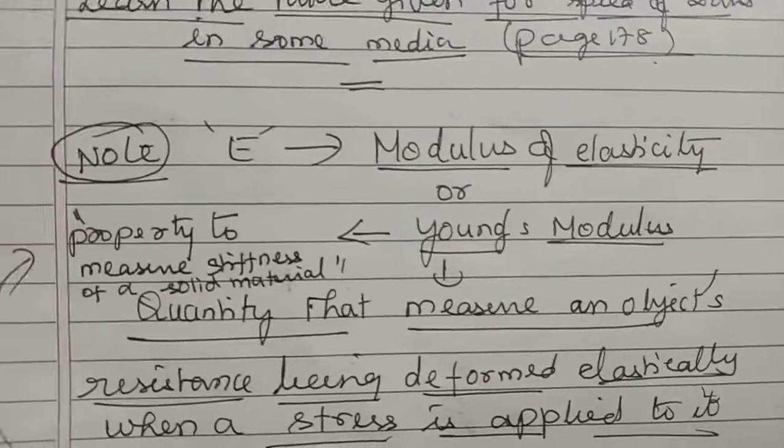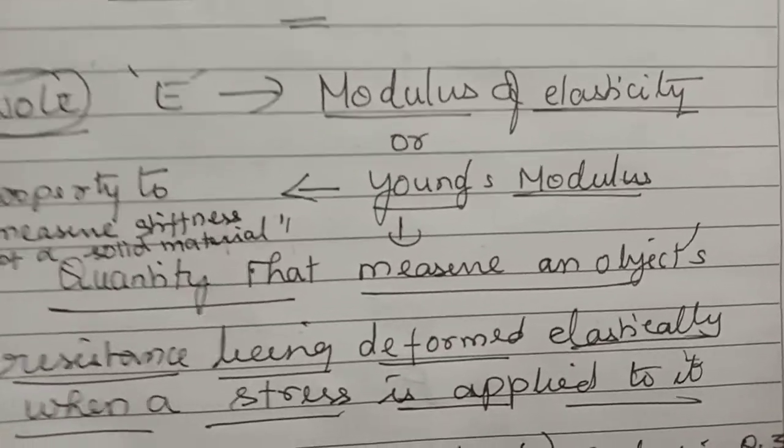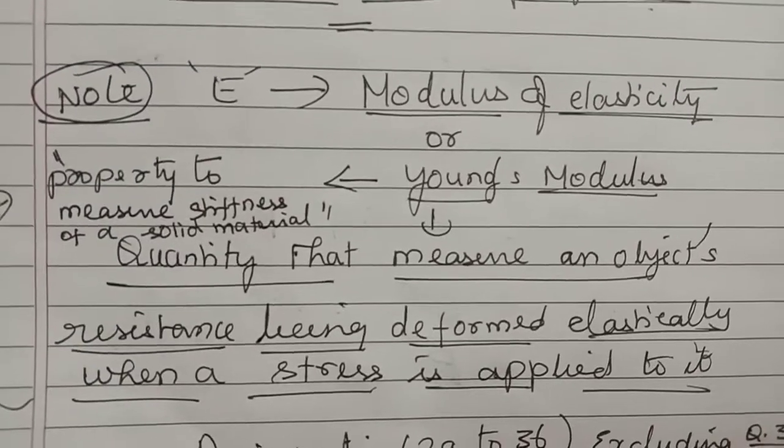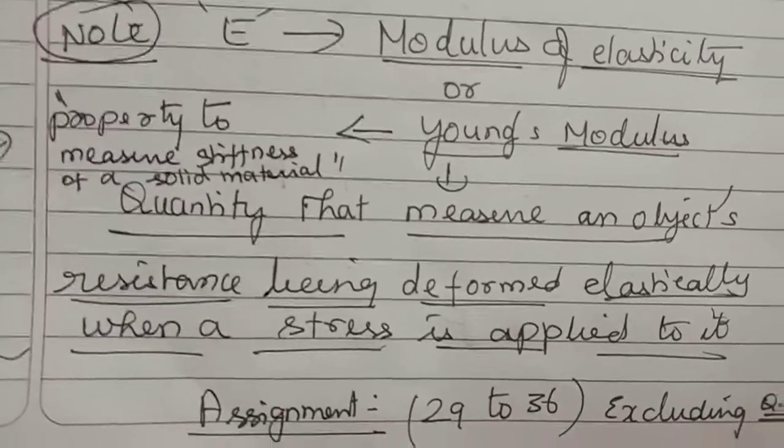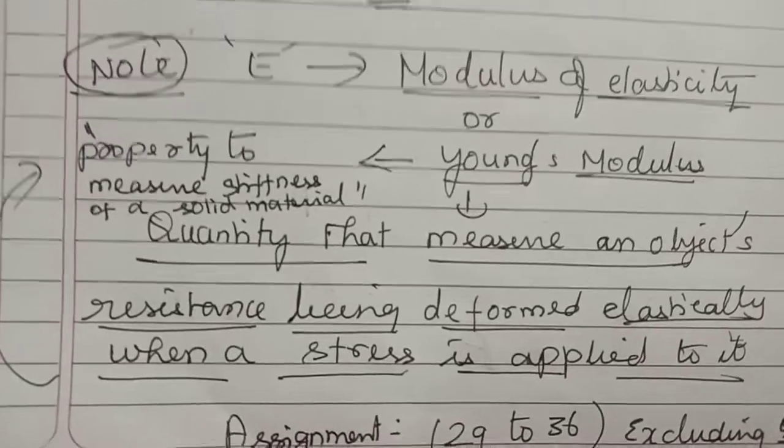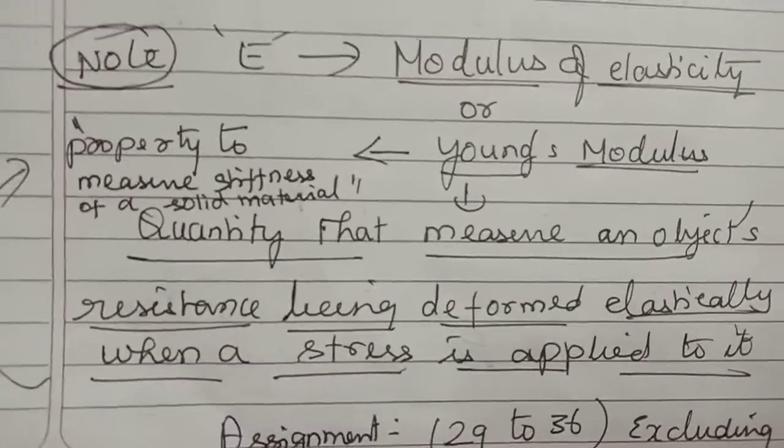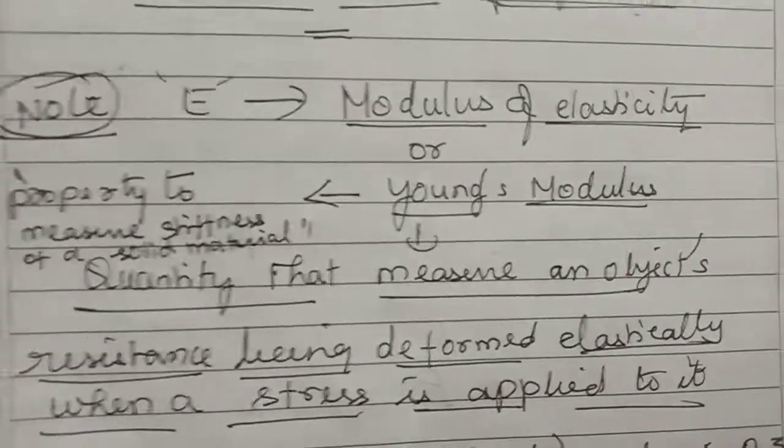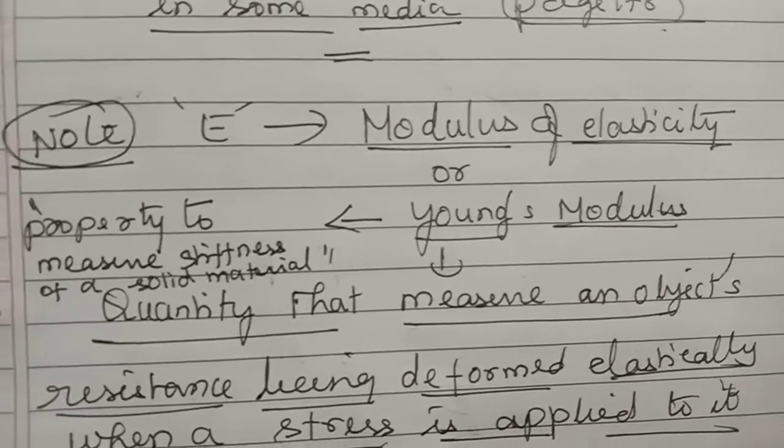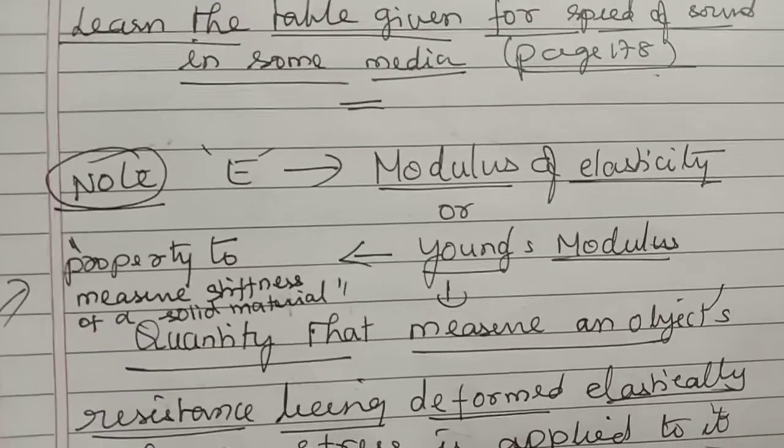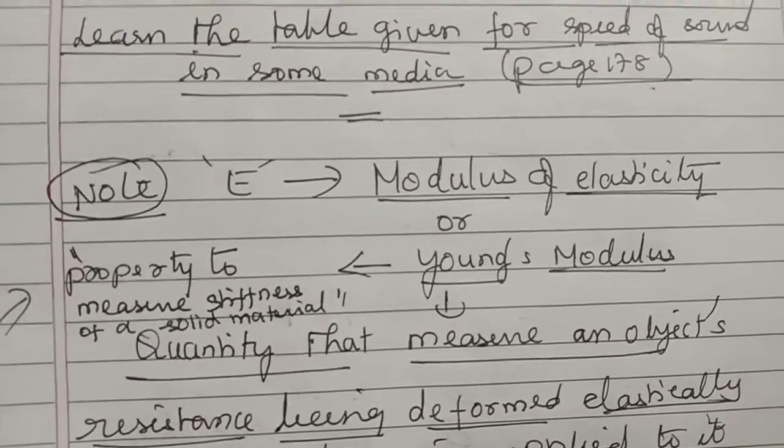What it means is the Young's modulus will give you the measure. Suppose you give pressure on an object, how much the object has the resistance to being deformed—deformed means losing its shape. Or in other words, you can say this is a property to measure the stiffness of a solid material.